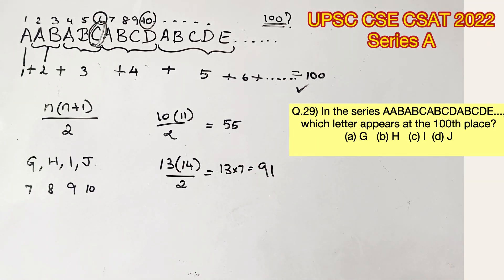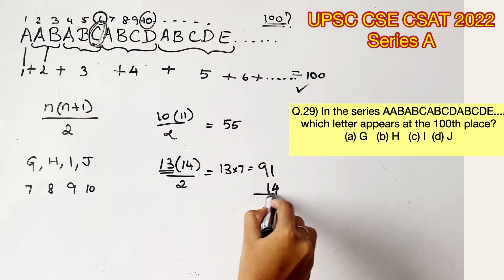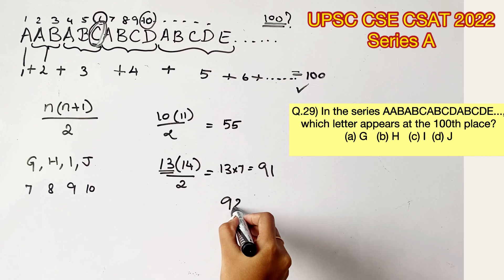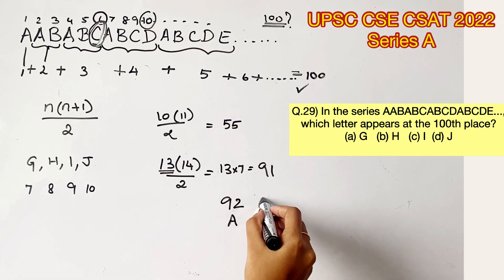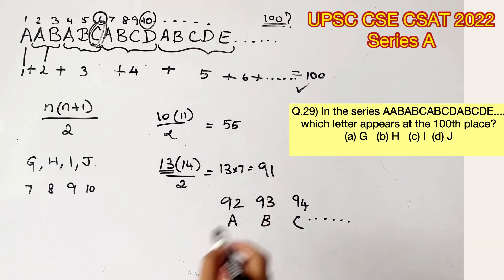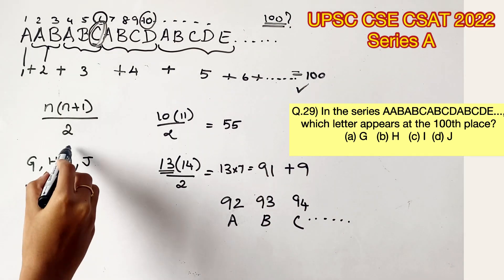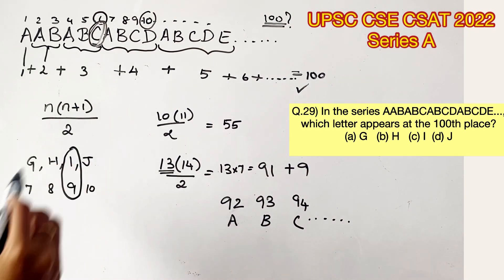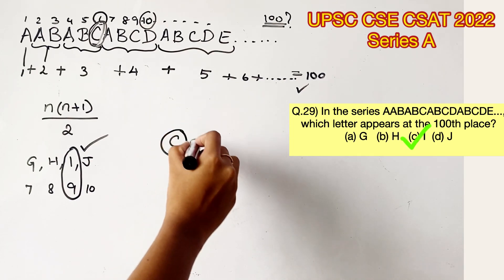The next sequence will be starting from A to the 14th letter, which we don't need because 91 plus 14 is going to exceed 100. All we need is the 100th position. Now, from 92, we know that it's going to start from A. 93 is B. 94 is C, and so on. So, all we need is to find out what letter is occupying the 9th position, that is I, which means option C is the right answer. Have a great day.